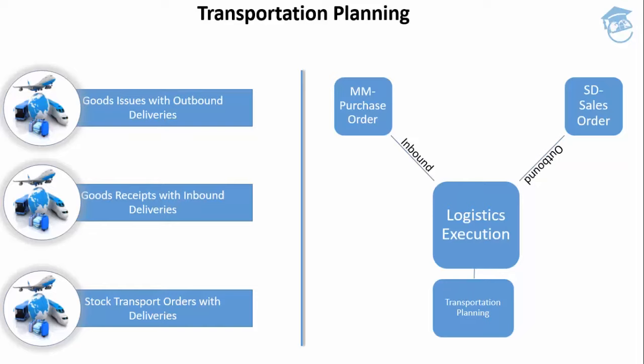If you've been following our earlier sessions, you'll remember that it's possible to have a goods receipt without an inbound delivery, or a goods issue without an outbound delivery. Transportation planning, because it's responsible for planning inbound and outbound shipments, relies on the existence of an inbound or outbound delivery. The third category, stock transport orders with deliveries, covers stock moving from one warehouse to another within an organization.